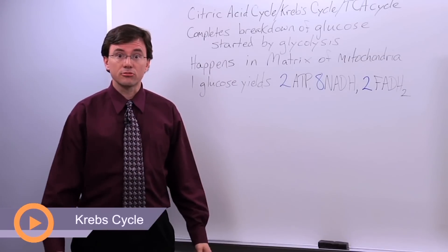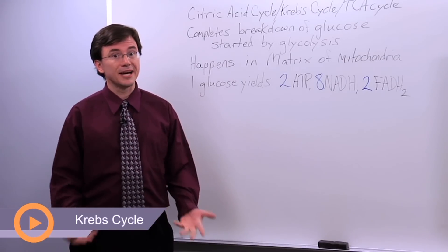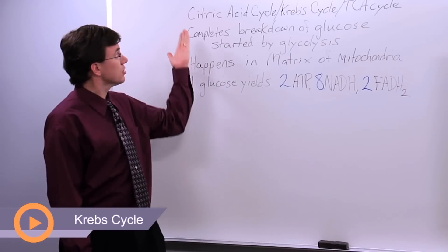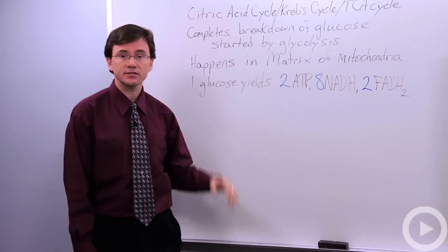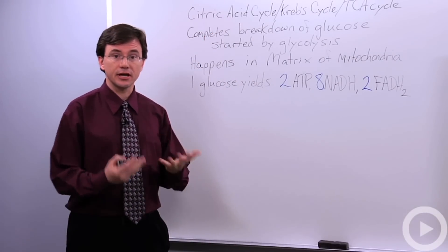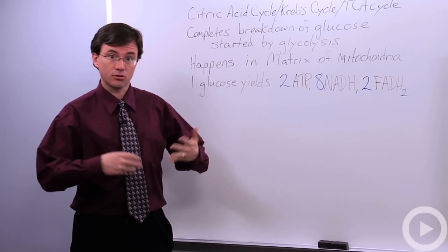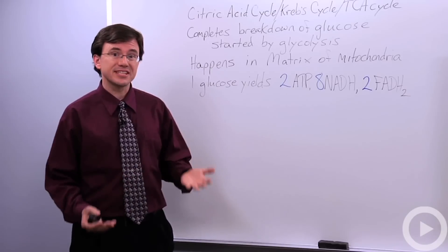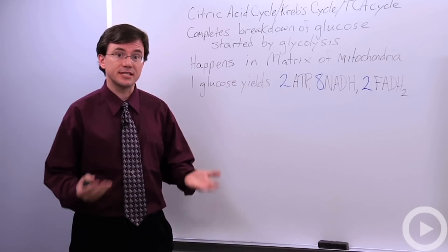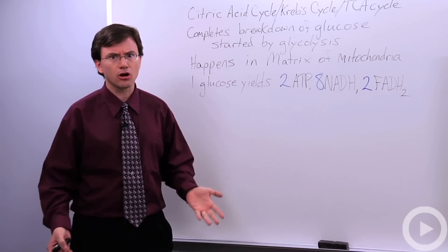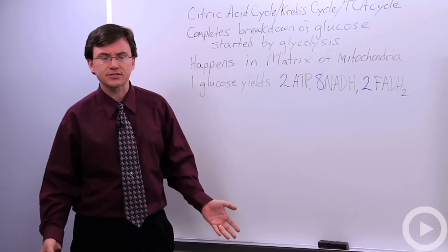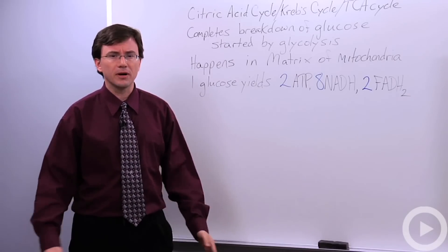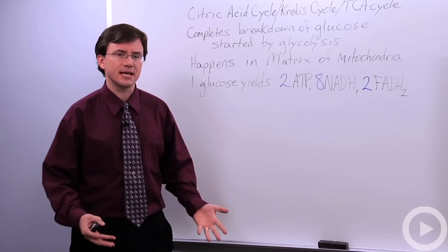The second step of aerobic respiration goes by many different names. Some textbooks will call it the citric acid cycle. Others will name it after the guy who discovered it — the Krebs cycle — or it's even referred to as the TCA cycle, which stands for tricarboxylic acid cycle. No matter what name you go by, it's all the same thing.